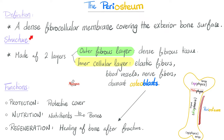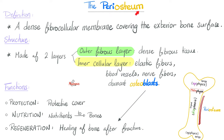The definition of periosteum: it is a dense fibrocellular membrane covering the exterior bone surface. The periosteum is made of two layers — an outer fibrous layer that is very dense and strong, and an inner cellular layer that is elastic, with lots of vessels, lots of nerve endings, and dormant osteoblasts ready to differentiate after a fracture to start regeneration and repair.